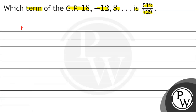Here we have a key concept: the nth term of a GP is always equal to a times r raised to the power n minus 1, where a is the first term and r is the common ratio. The common ratio is the second term divided by the first term, or the third term divided by the second term, and so on.